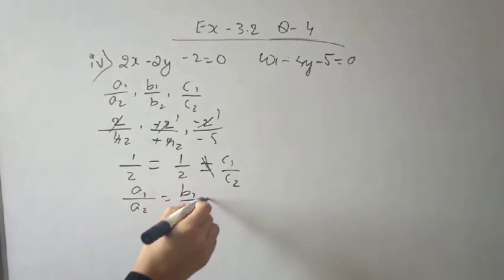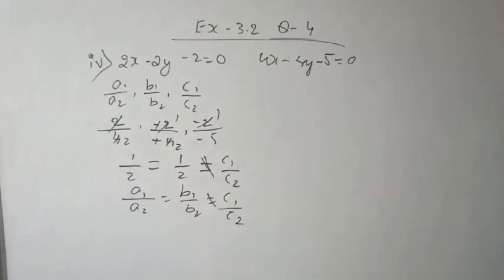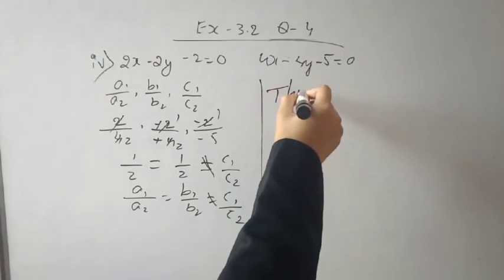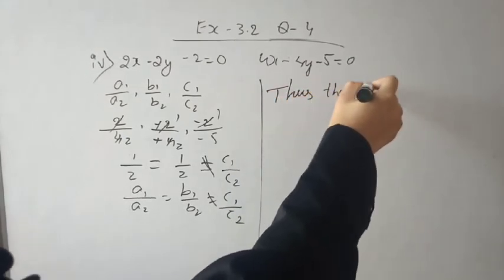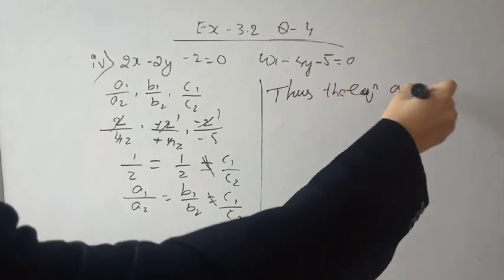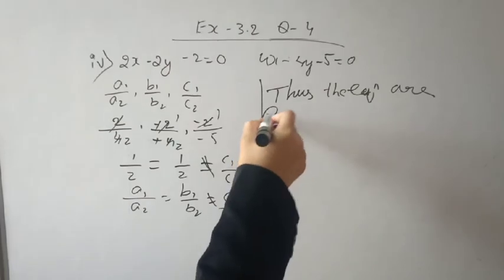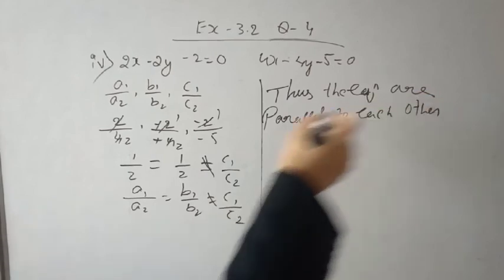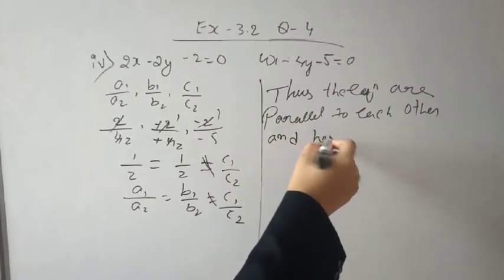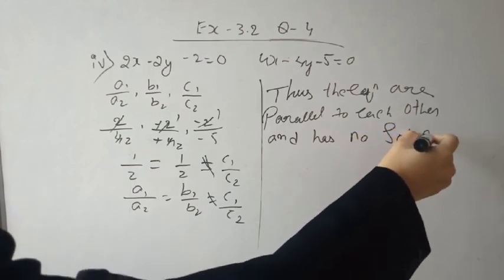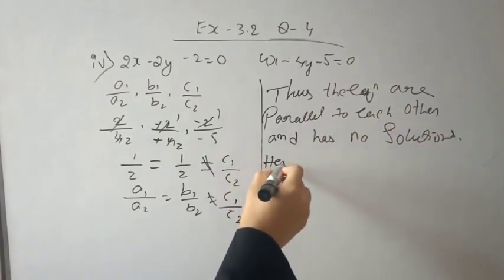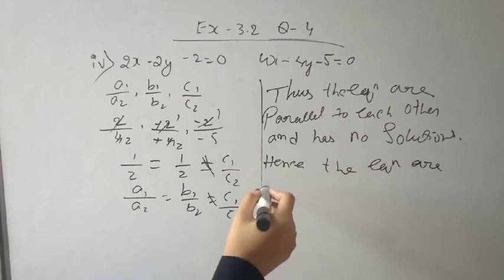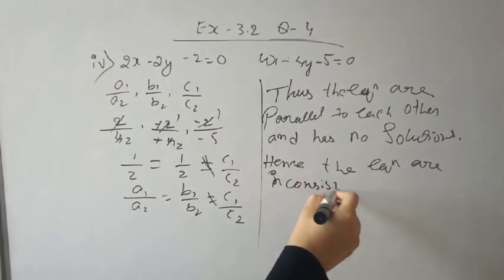Conclusion: the equations are parallel to each other, there is no solution. Since the lines are parallel, they will never intersect, so there is no solution point. Therefore there is no need to represent them on a graph. Therefore the given equations are inconsistent.